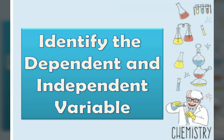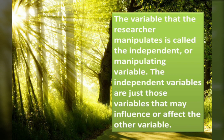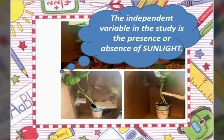Next question: name the independent variable and dependent variable. In experimental research, an investigator manipulates one variable and measures the effect of that manipulation on another variable. The variable that the researcher manipulates is called the independent or manipulating variable — it may influence or affect the other variable. In our experiment, what did you manipulate? Is it the loam soil, the fertilizer, or its exposure to sunlight? The independent variable in the study is the presence or absence of sunlight.